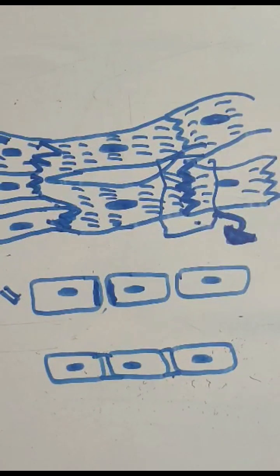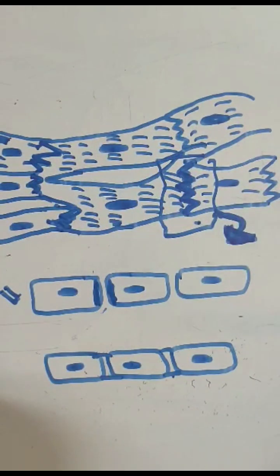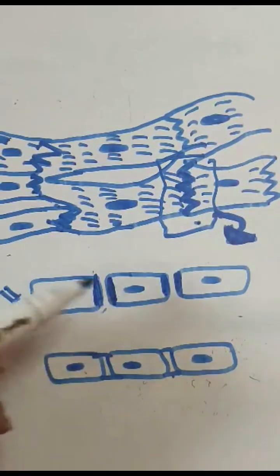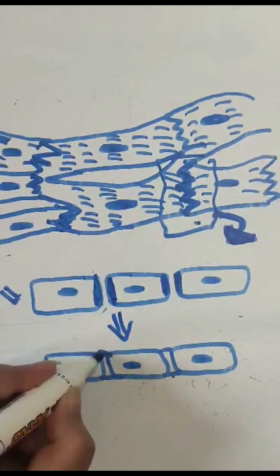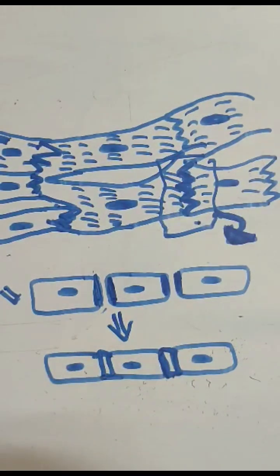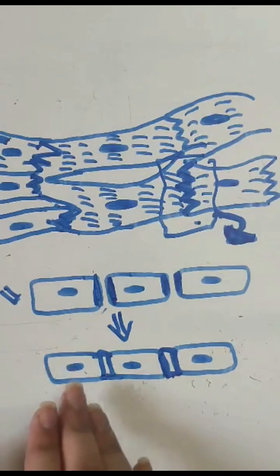This diagram shows the series and parallel arrangement and branching of the cardiac muscle cells. Intercalated discs represent the overlapping of cell membranes of adjacent cells, forming gap junctions. Gap junctions are the most permeable of all cellular junctions and have very low resistance, resulting in very rapid diffusion of ions and action potentials from one cell to another.